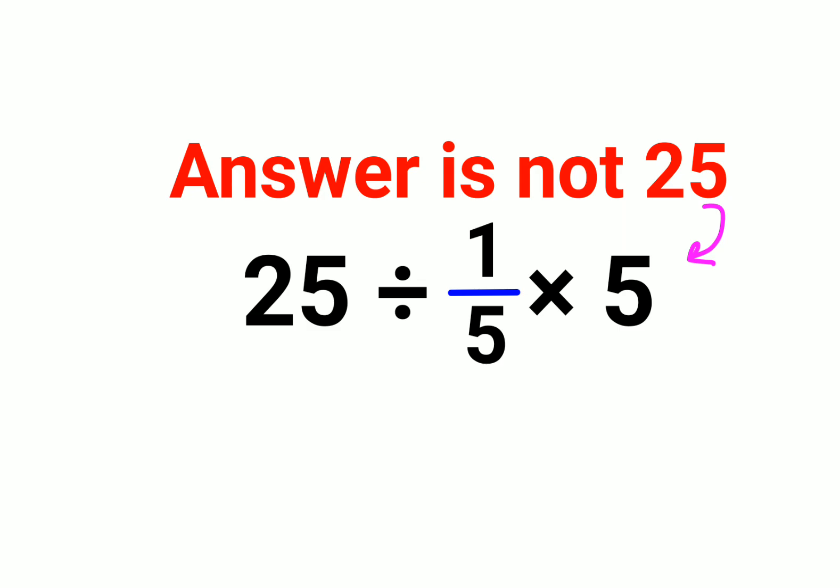Please understand whenever you have division and multiplication, both of them hold equal precedence. Okay, so all you have to do is you will go from left to right. Whatever operation happens first from the left hand side will be done first.